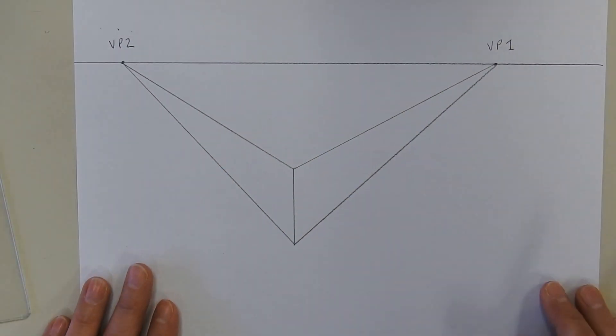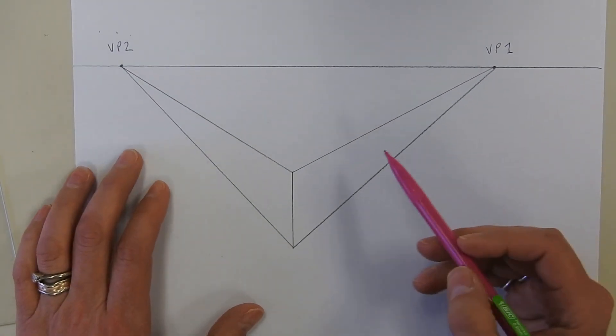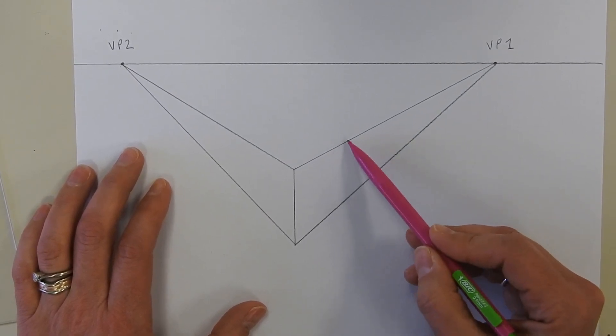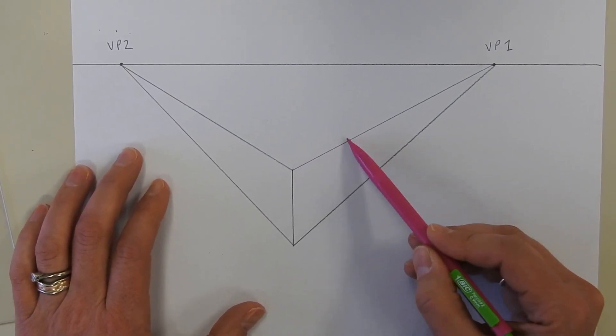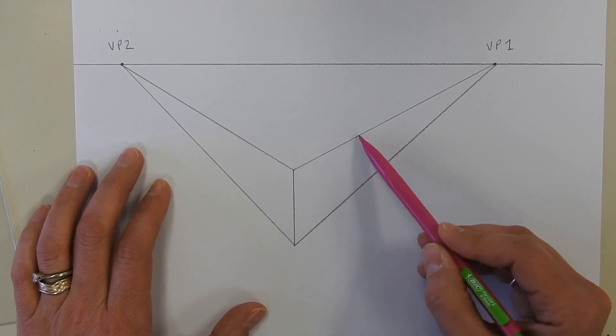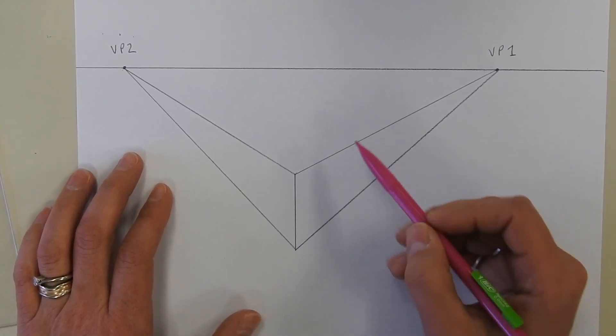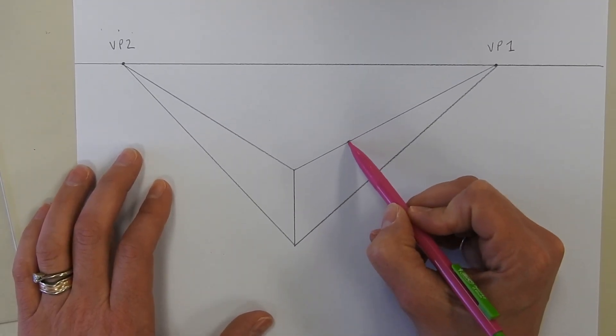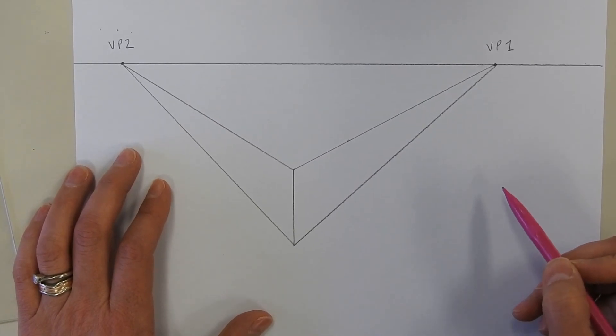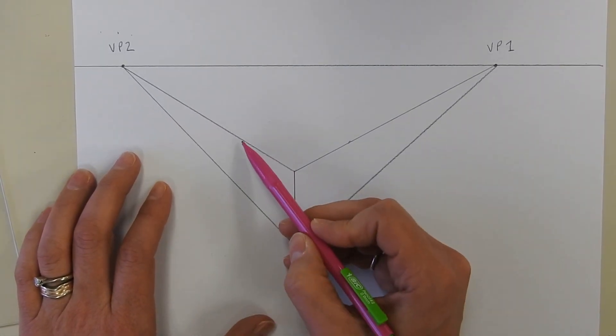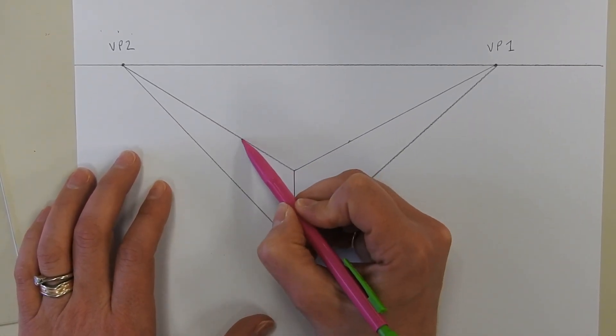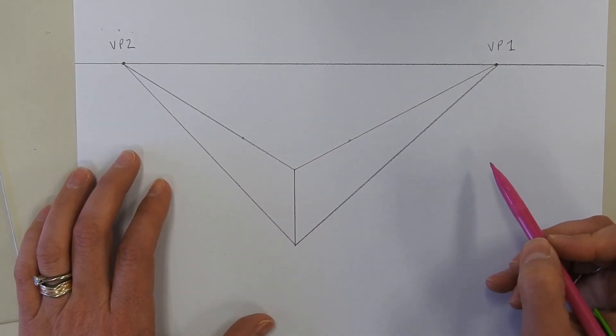Okay, now here's where it gets a little complicated. On the one point perspective where we decided how long this edge was for the cube, I need to do the same thing on this one. So I'm going to just kind of estimate right here. Okay. I also need to estimate on the other side as well.